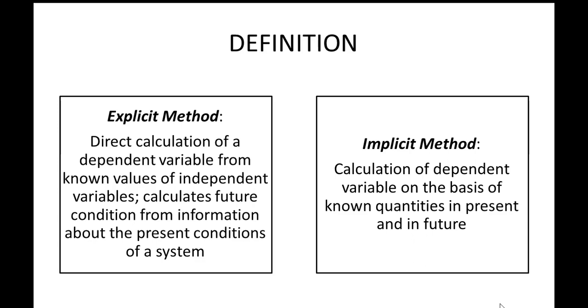Just on the basis of what I know at present, I can calculate for the future conditions. In the implicit method, what happens is it is based on the quantities or the independent variables which have been evaluated both in present and in the future state. This means on the basis of some aspect of the present conditions and some aspect of the future conditions, we can conclude what a particular dependent variable will turn out to be in some time in the future.